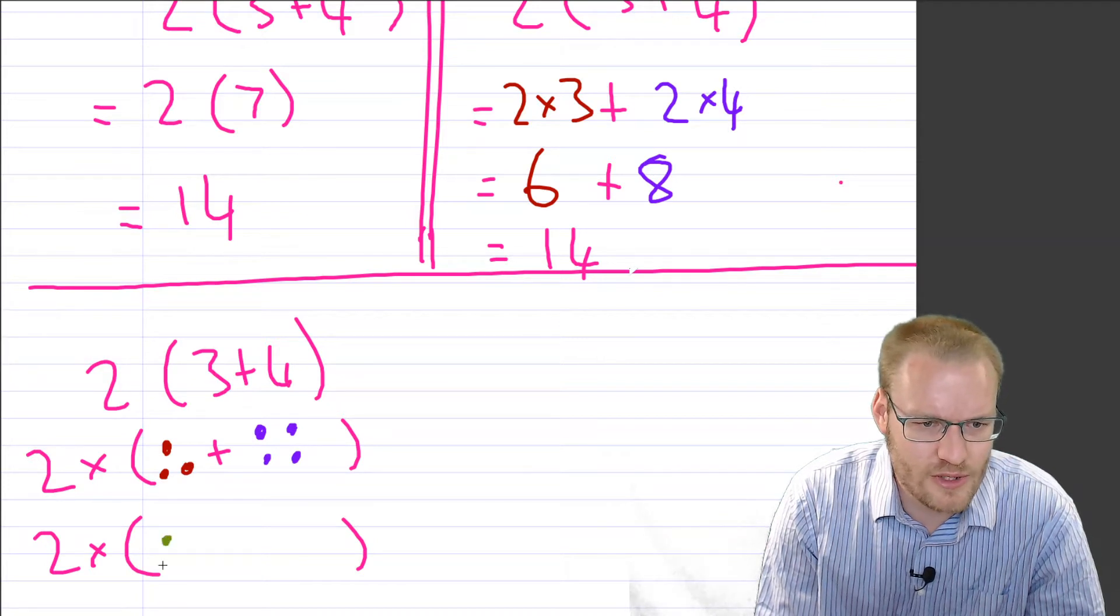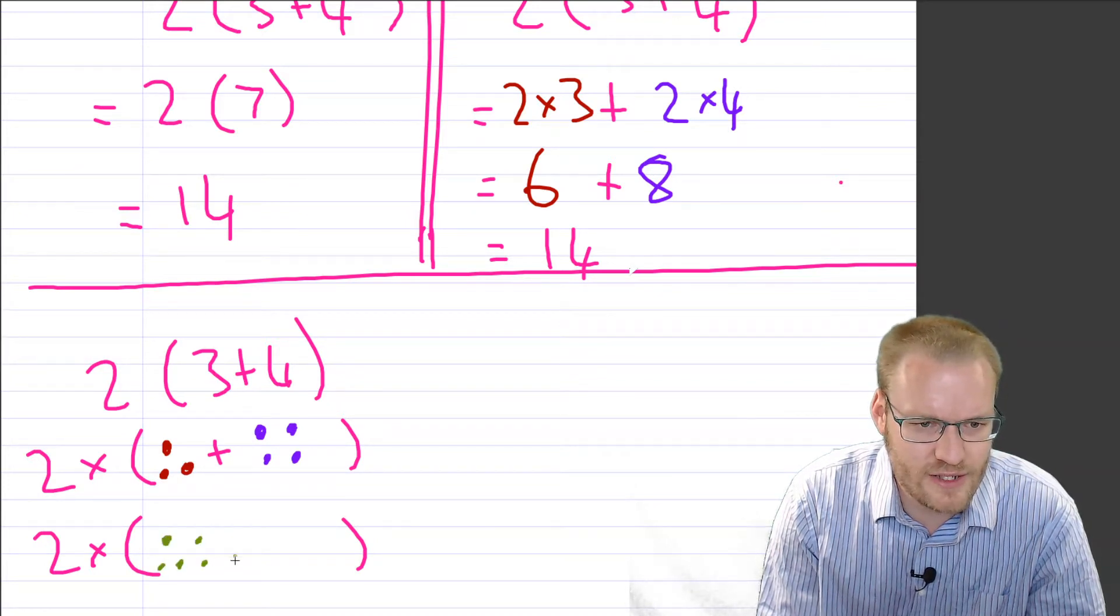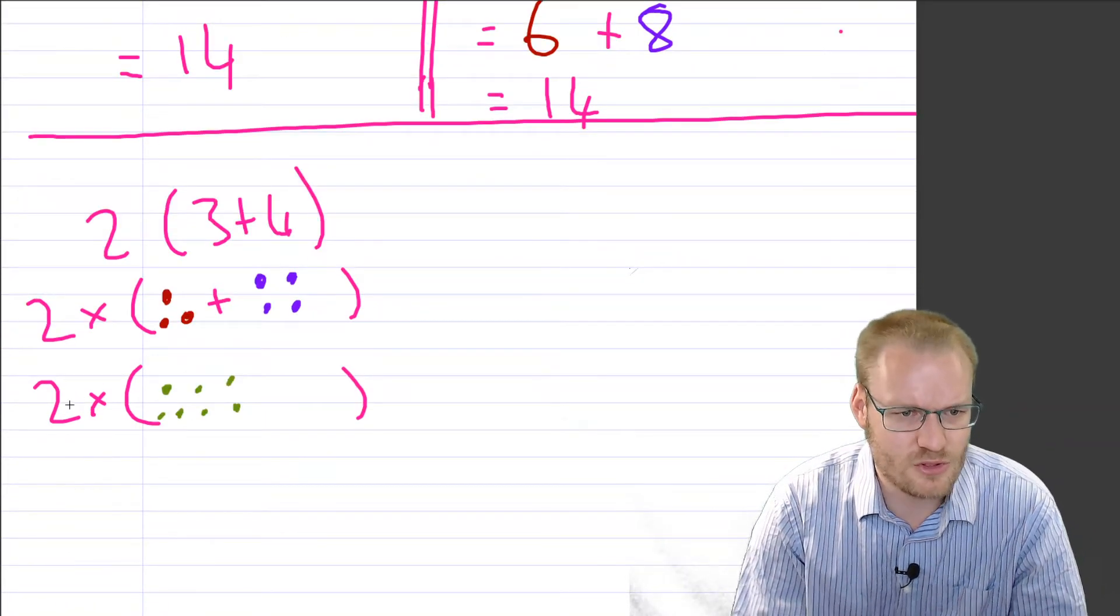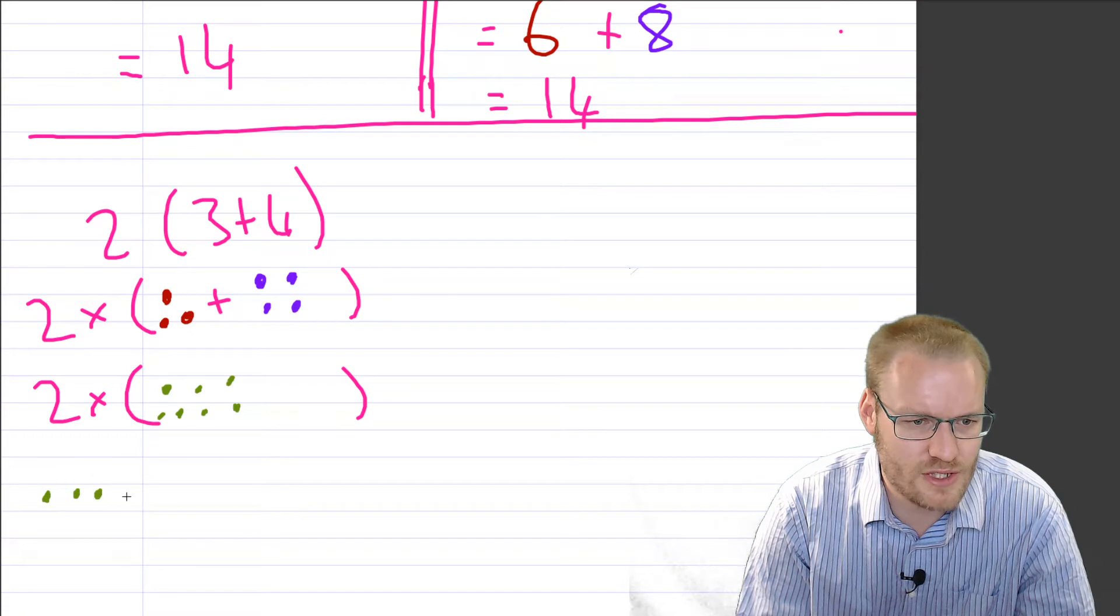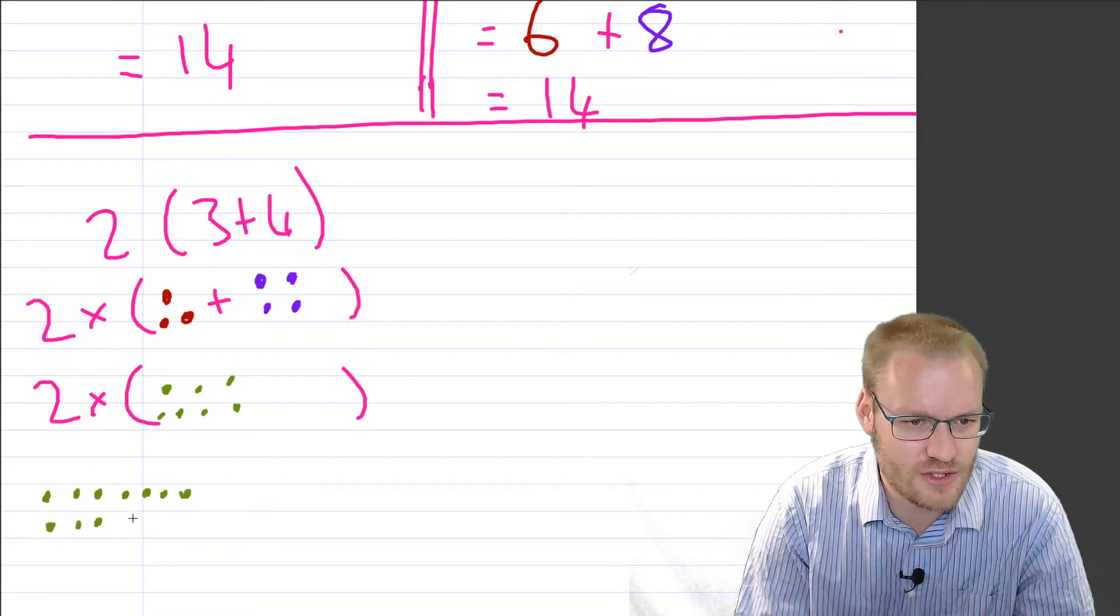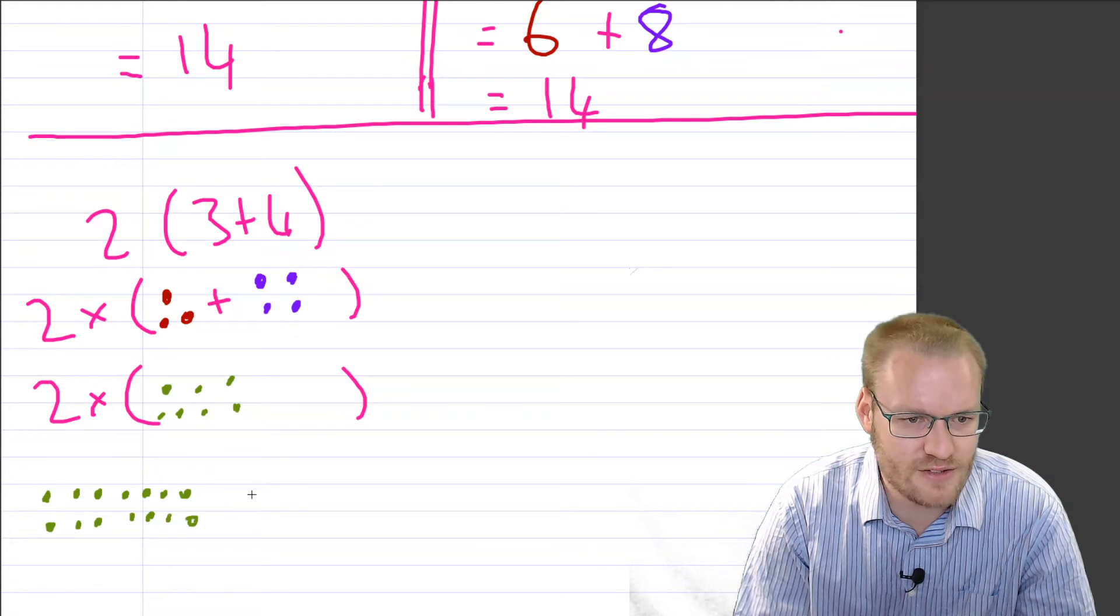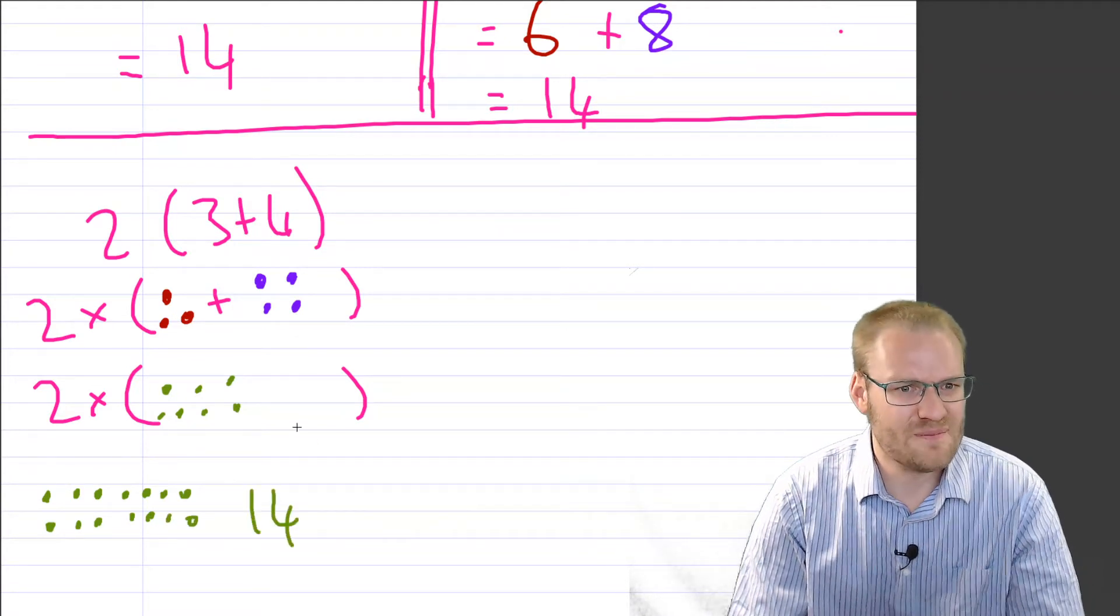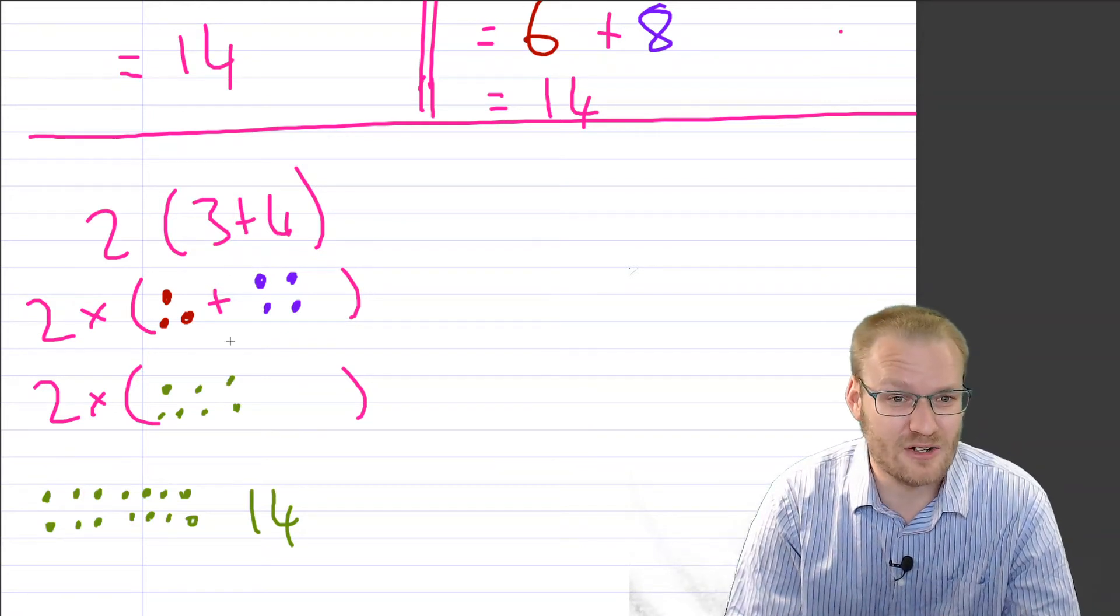And if we've got 2 lots of 7, because we've got 2 times that, we've got 1, 2, 3, 4, 5, 6, 7. And we've got another lot of them. 1, 2, 3, 4, 5, 6, 7. How many do we have all together? Well, we've got 14. So in other words, that would be one way of looking at how you did that. You added those together first and then said you've got 2 lots of them.